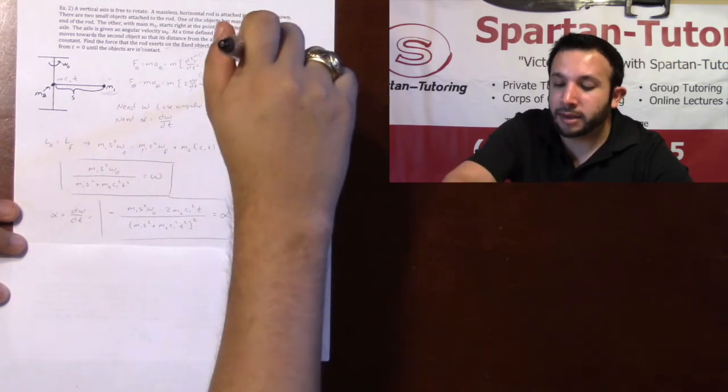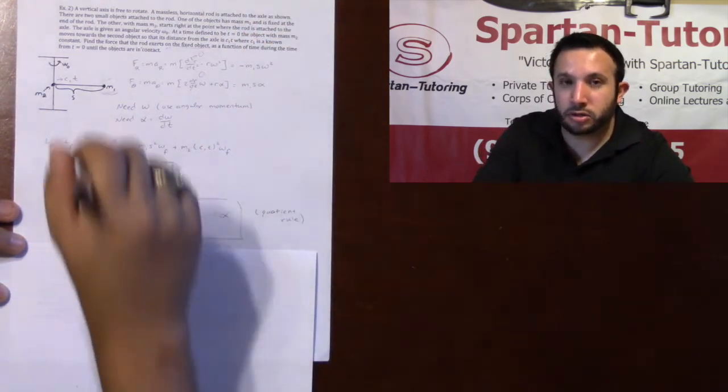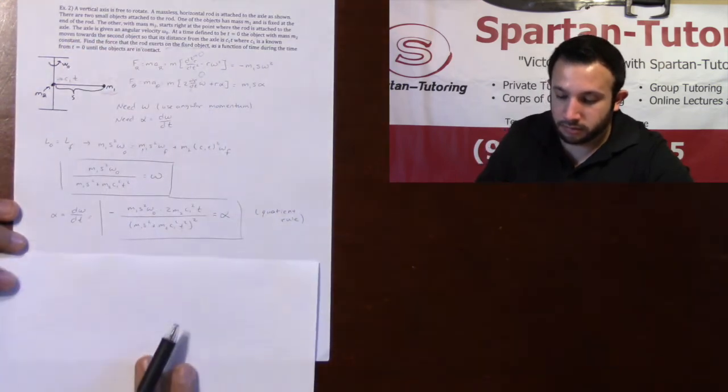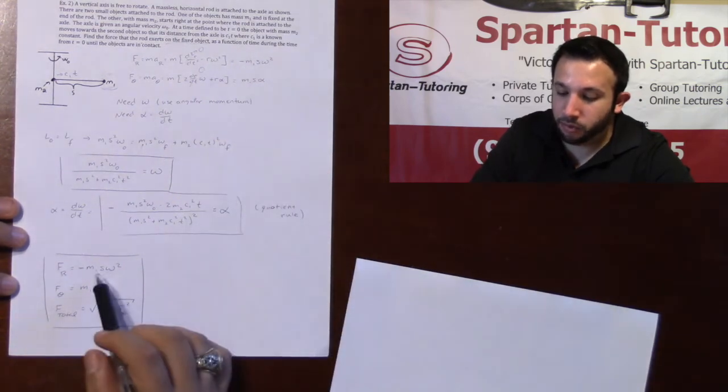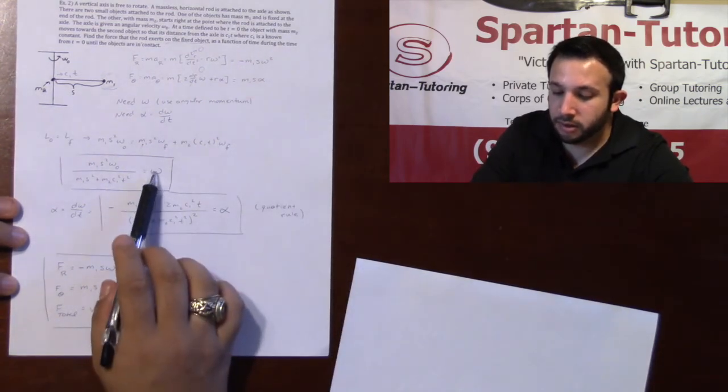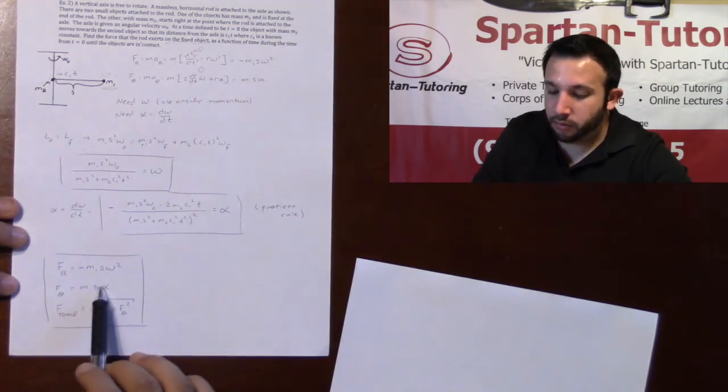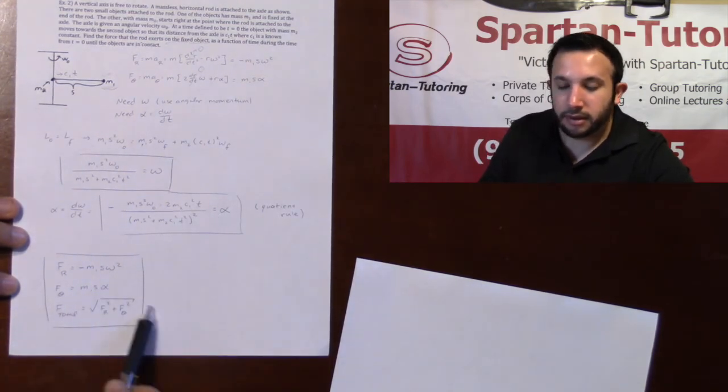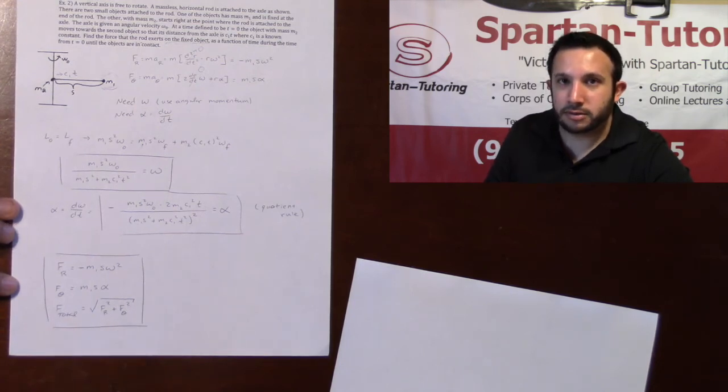And now that you have omega, and now that you have alpha, if you want to find the force the rod exerts on m1, FR is just your negative m1s omega squared. F theta is your m1s alpha. And as for your total force, that's just the square root of your FR squared plus your F theta squared. You're welcome.